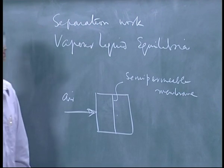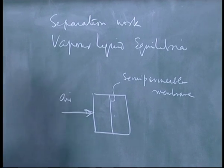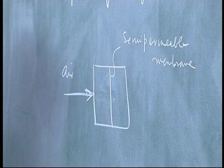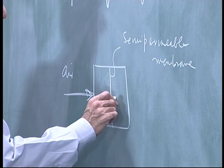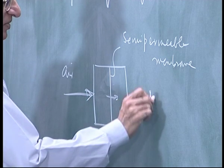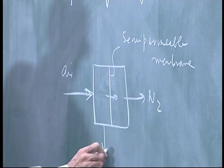Let us assume I have a semi-permeable membrane that can distinguish between the size of oxygen and size of nitrogen. So nitrogen would go right through. You can pull out nitrogen here. Oxygen will come out here.